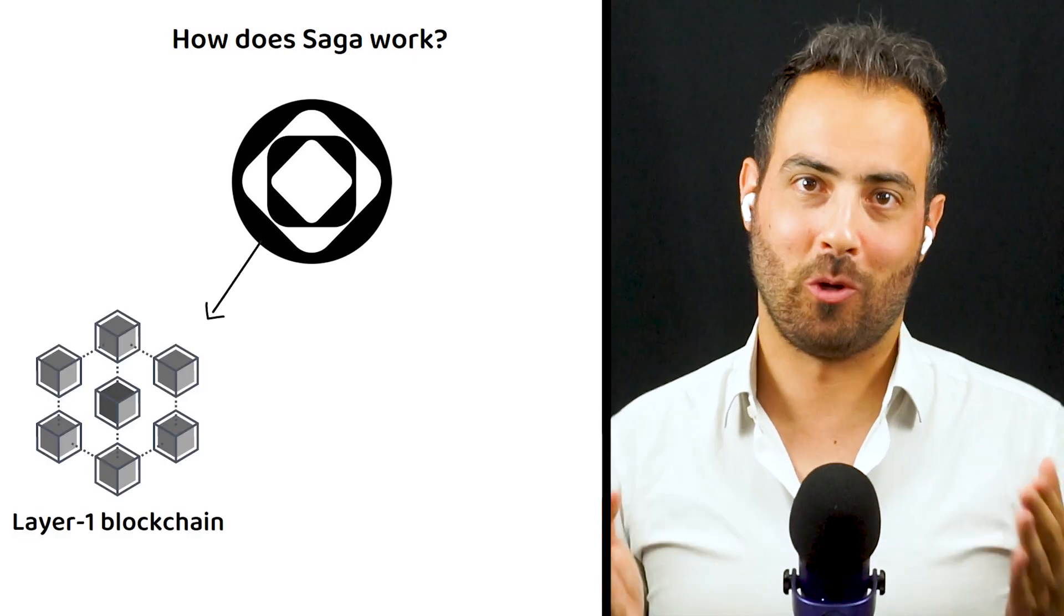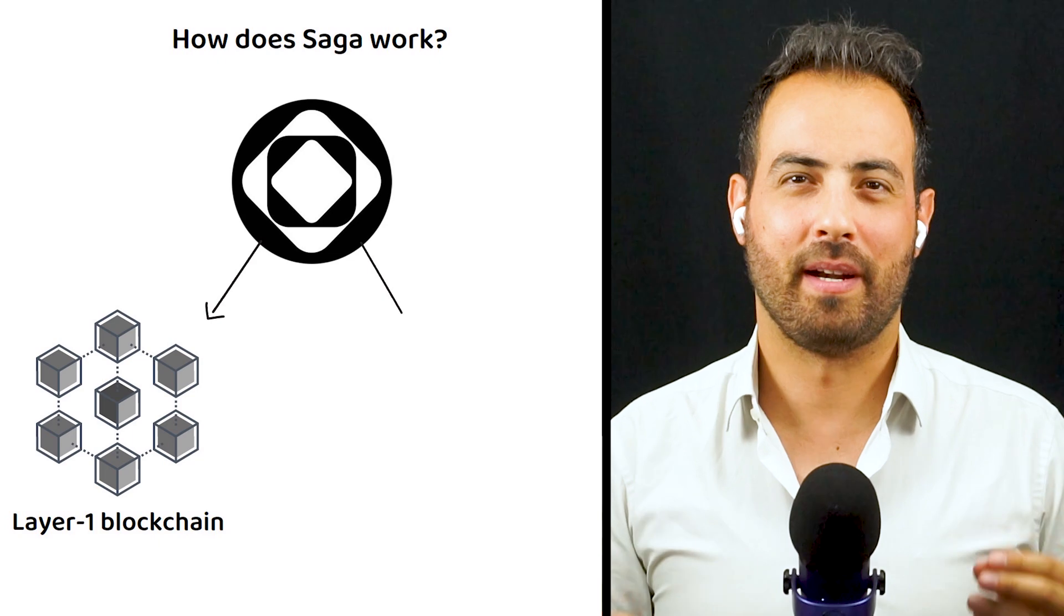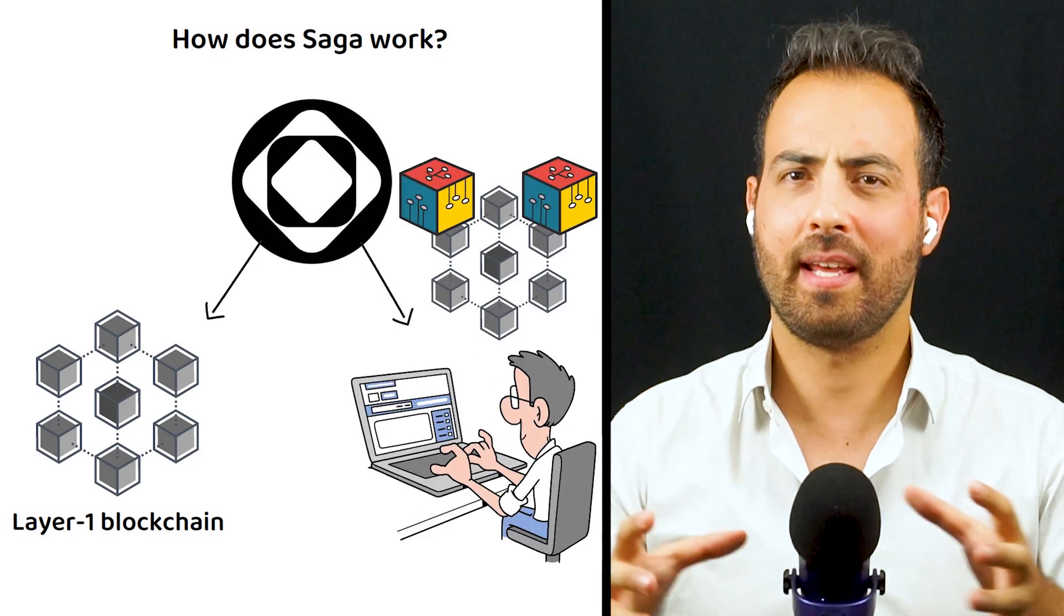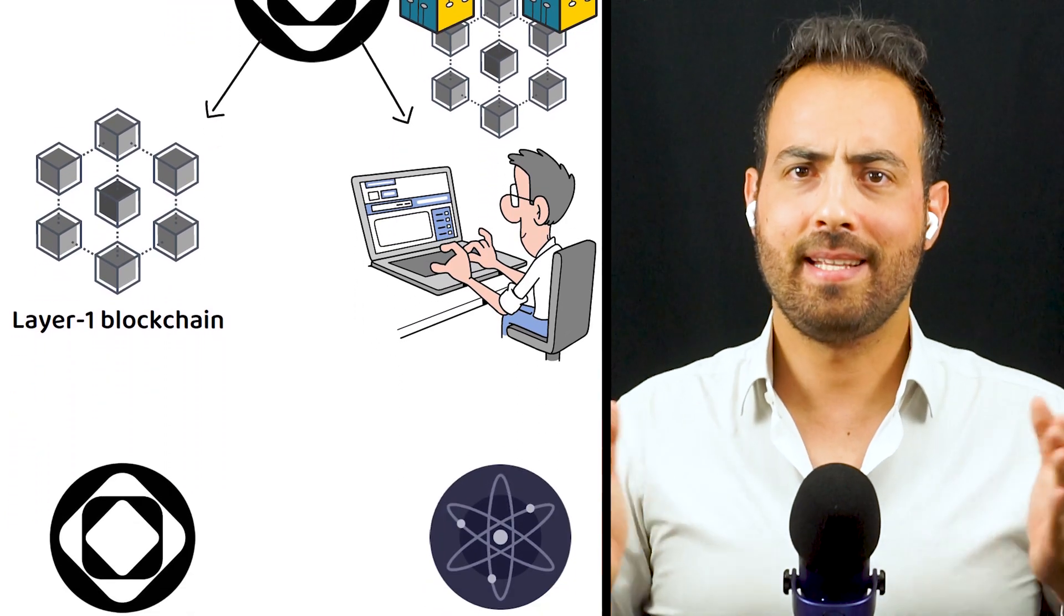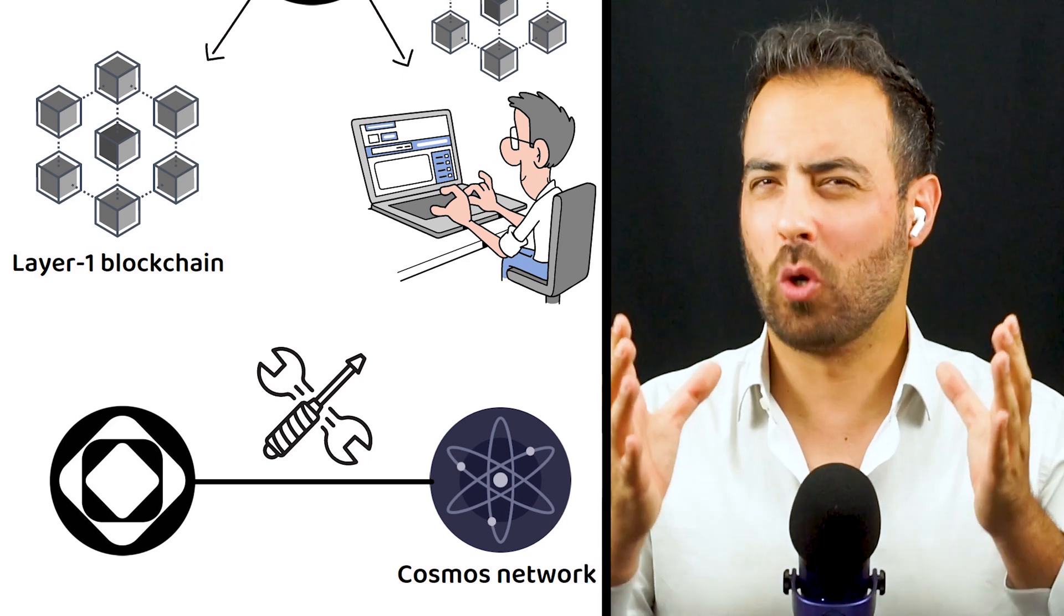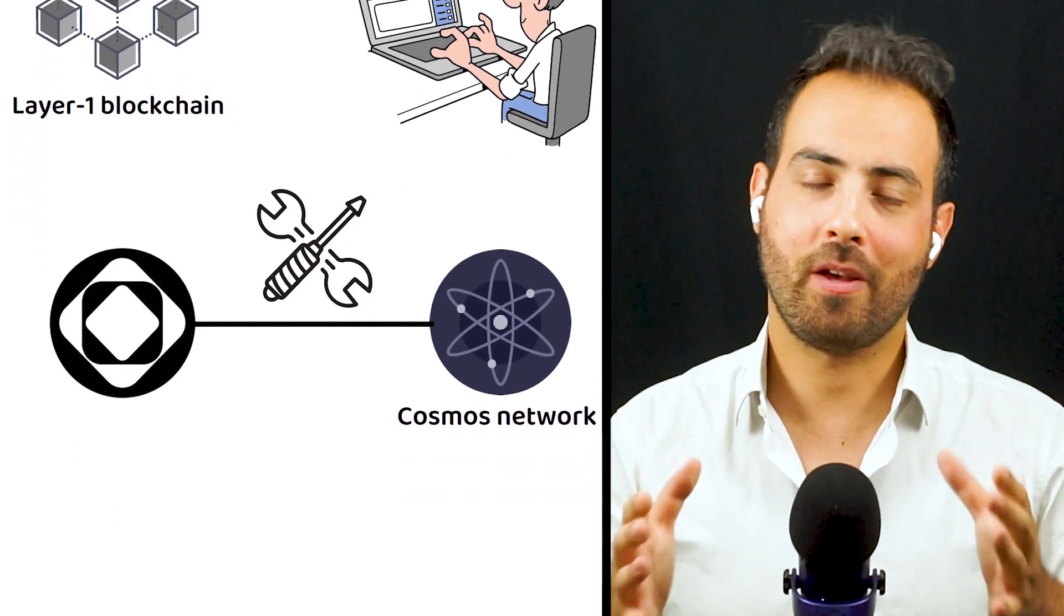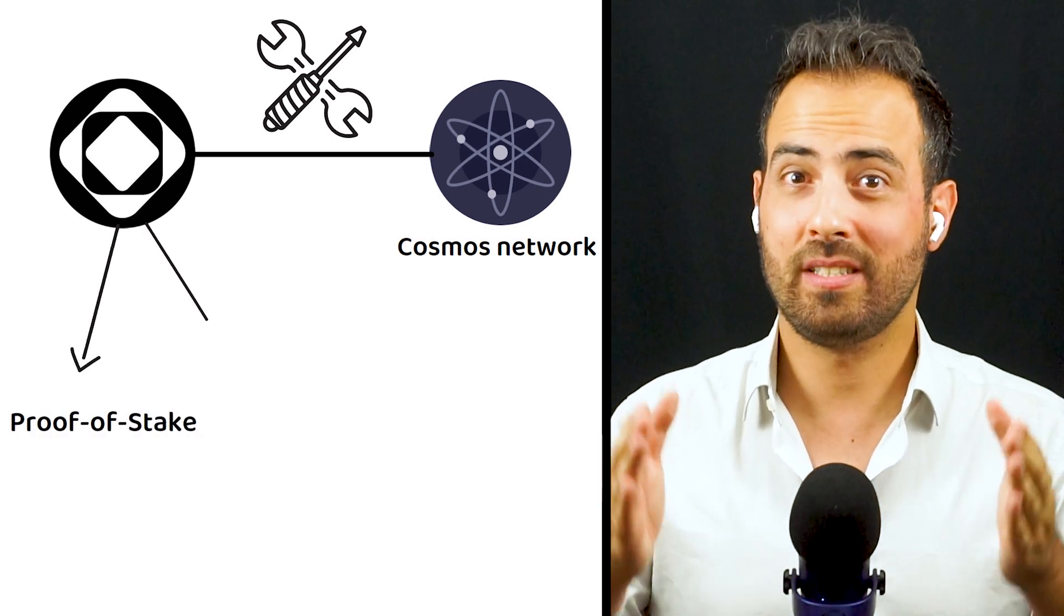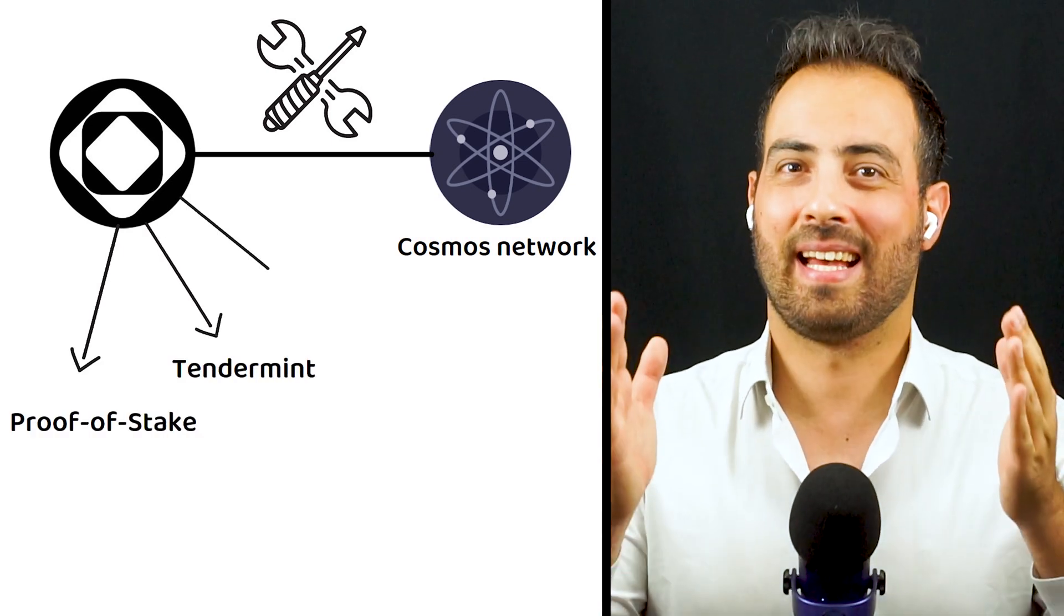As I mentioned, Saga is a layer one blockchain protocol that allows developers to design their own dedicated blockchains for running applications. Saga itself was created on the Cosmos network of independent blockchains, which also means like the rest of the Cosmos ecosystem, it is a proof-of-stake blockchain that uses Tendermint for its consensus and has the Inter-Blockchain Communication protocol enabled to allow for interoperability with all the other Cosmos-based blockchains.